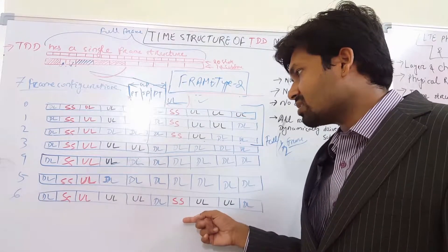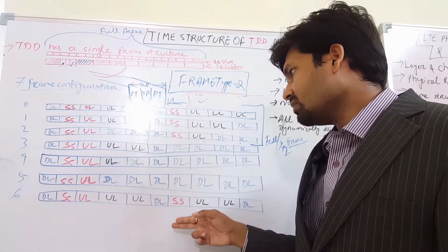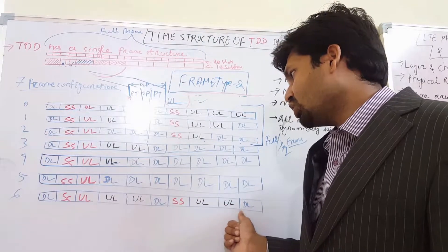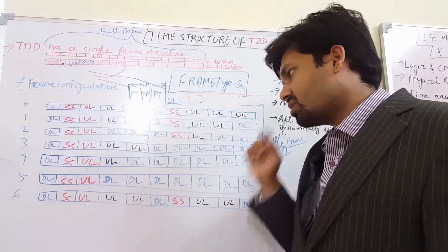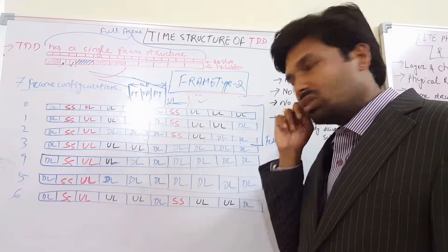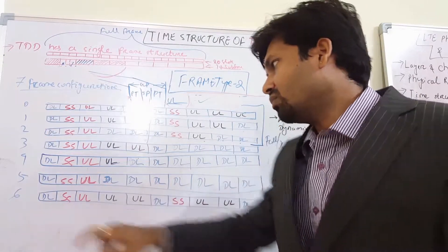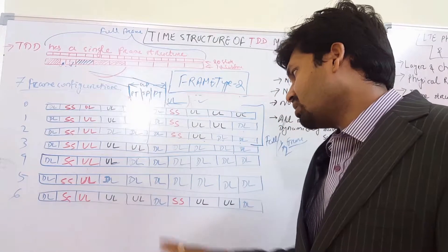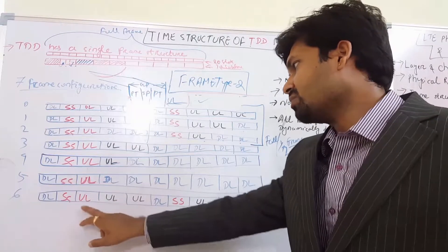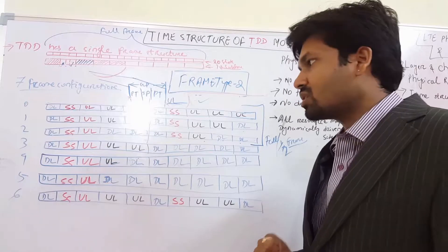The last configuration has 5 uplink subframes, 3 downlink subframes, and 2 special subframes. So that is 3 downlink, 2 special subframes, and 5 uplink subframes in total.